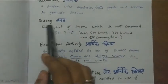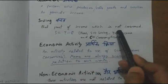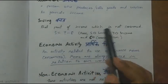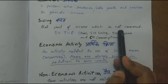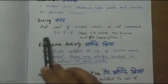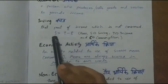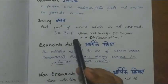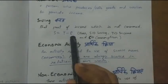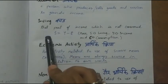The next economic activity is saving. Saving is that part of income which is not consumed — which we have not expended. The formula of saving is: S = Y − C. Here S denotes saving, Y denotes income or yield or earning, and C is consumption. So income minus consumption equals saving.